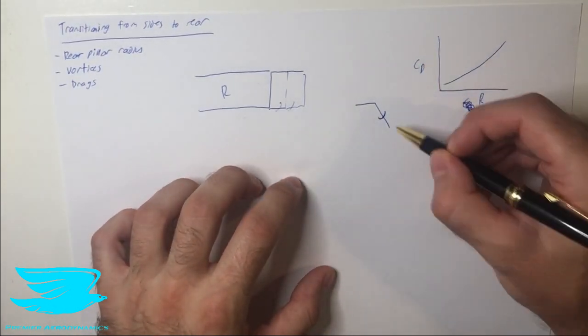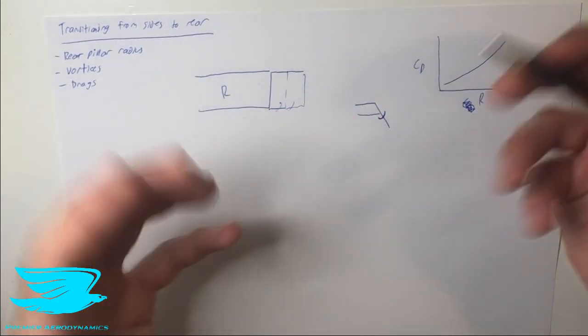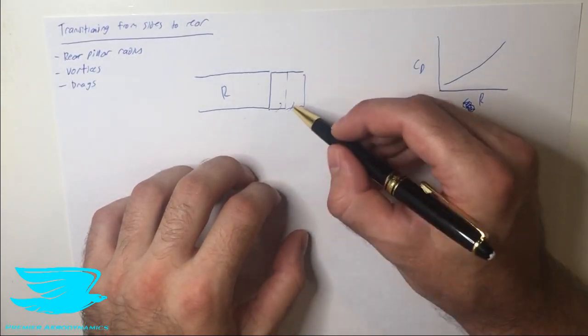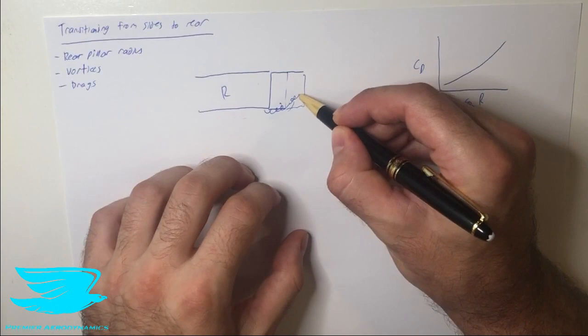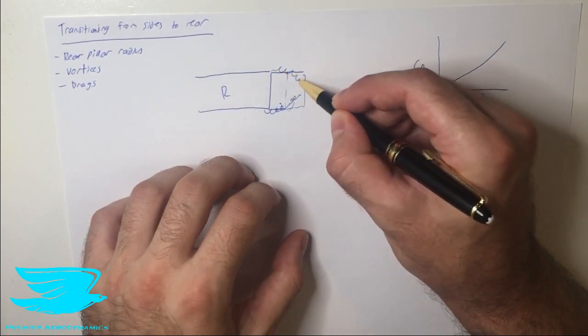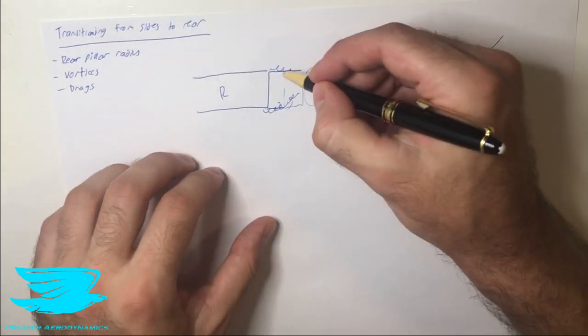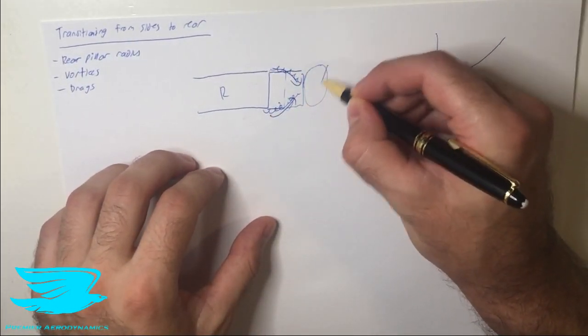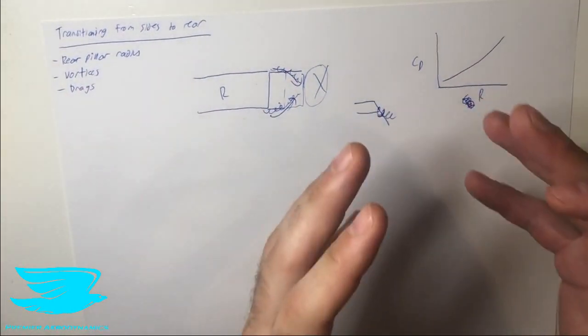often appear at the back here, so we'll start to get vortices forming. Now if we have a very rounded corner, these vortices will actually start to get sucked in on each side and they'll start to take up this region here. Now surprisingly, by funneling more flow in here, we actually reduce the wake size, but that doesn't reduce the drag overall.